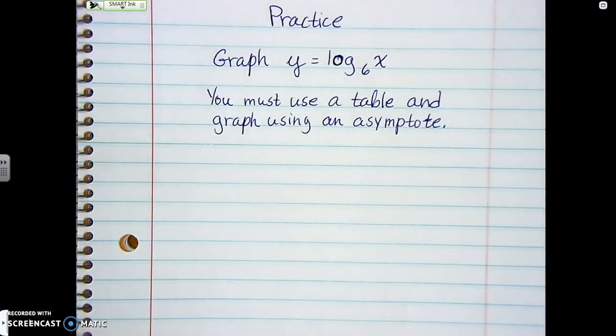And then, at that point, you're going to go ahead and graph it out on a graph, but make sure you have a vertical asymptote.